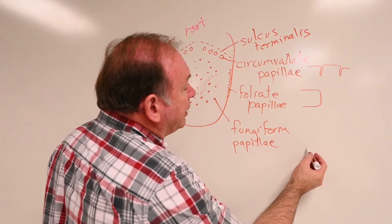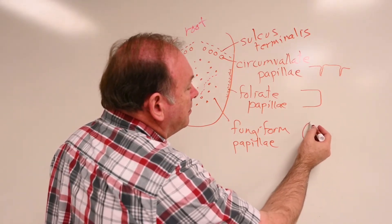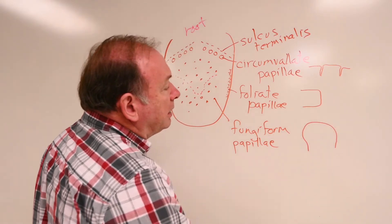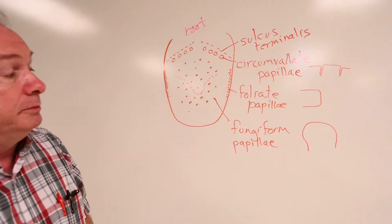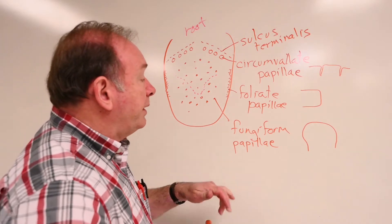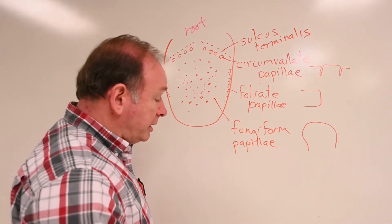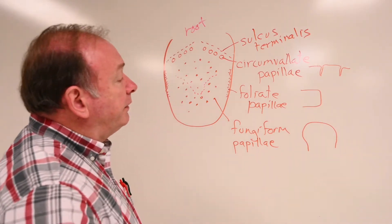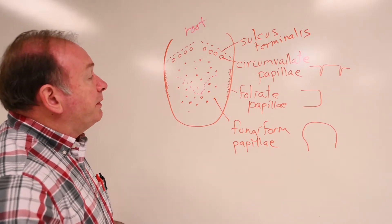Fungiform, if you were to look at them in cross-section, kind of look like a mushroom. That's why they call them fungiform. It looks like a puffball kind of thing forming up there. So anyway, we have those.